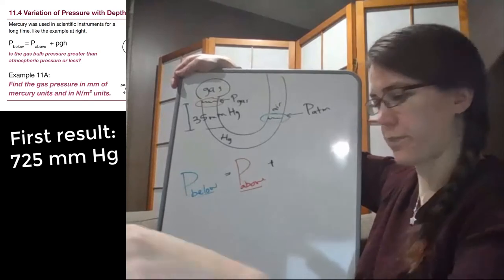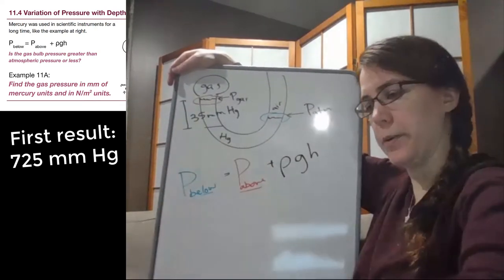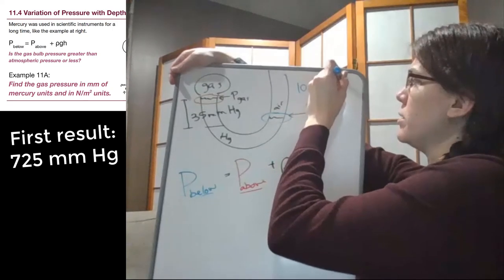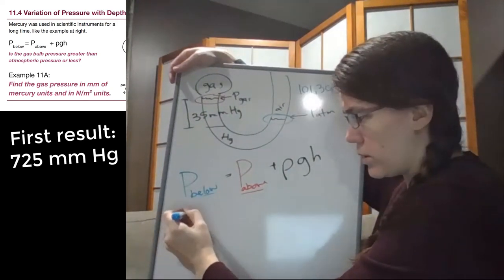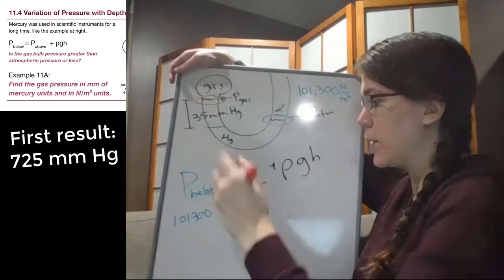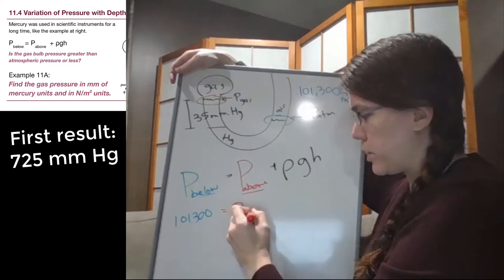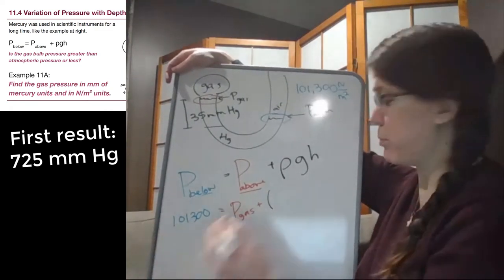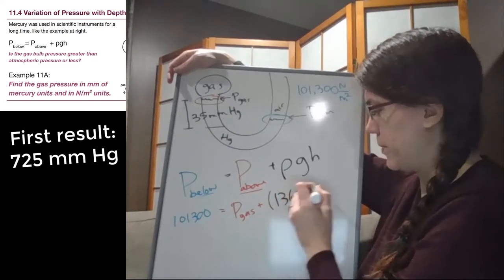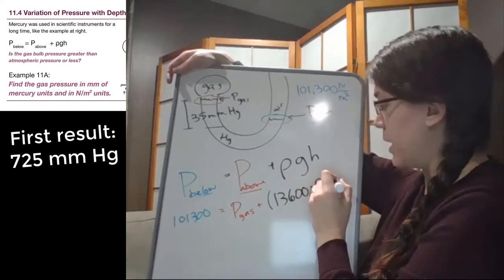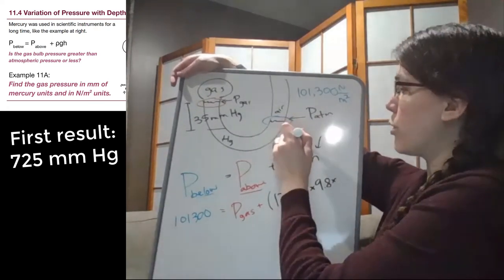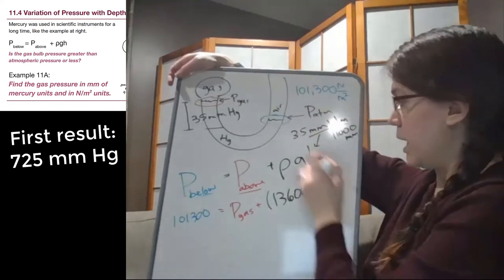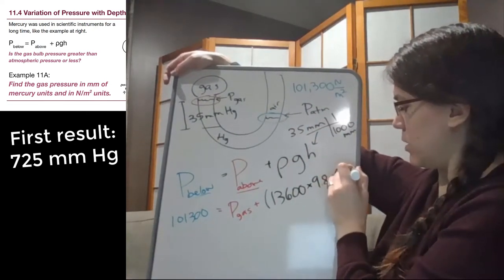So the picture is the same with rho, G, and H here. But the atmospheric pressure in standard units is 101,300 newtons per square meter, so 101,300. The pressure above in this situation is our gas pressure that we're trying to look for. And then our density here is the density of mercury, so 13,600. G is 9.8, and that height has to be in meters. So 35 millimeters, we can divide by 1,000 millimeters in one meter. And so we will get that the height is going to have to be 0.035.